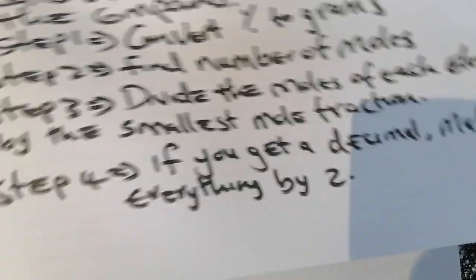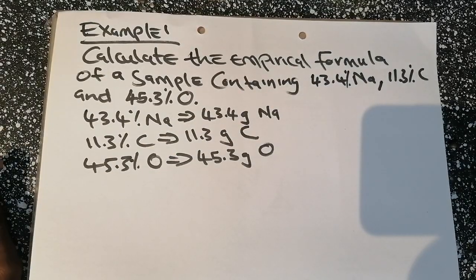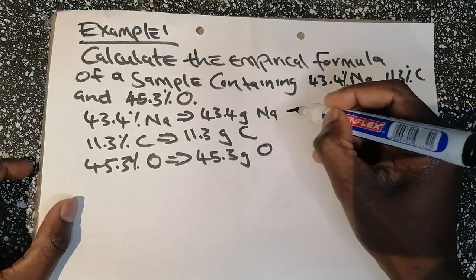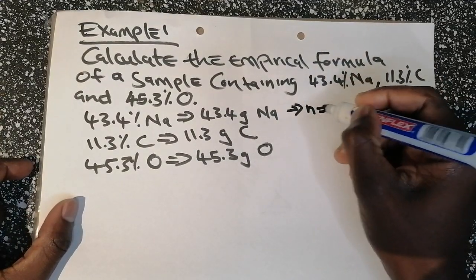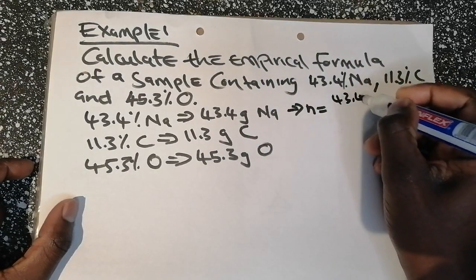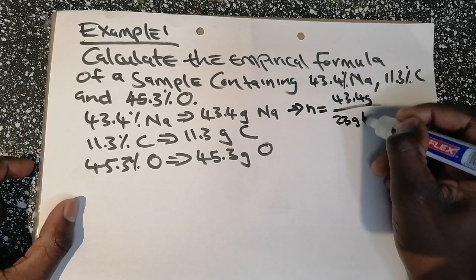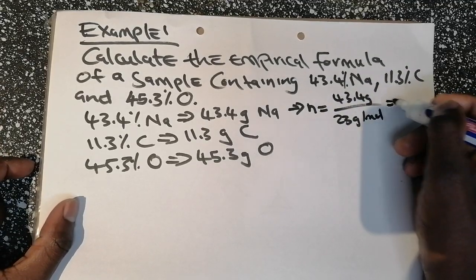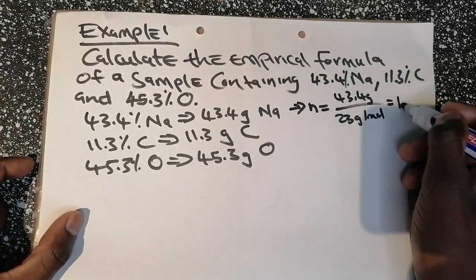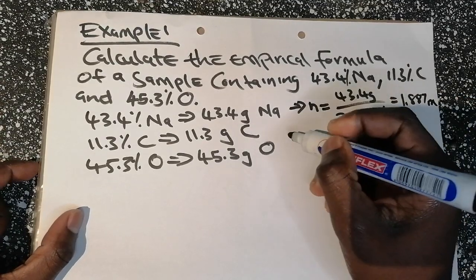Step two: find the number of moles. We have the masses so we can calculate moles. For sodium: moles = 43.4 grams divided by the atomic mass of sodium, which is 23 g/mol. That gives us 1.887 moles.